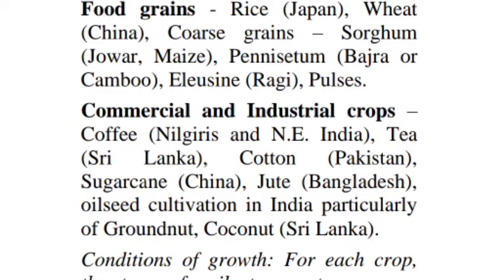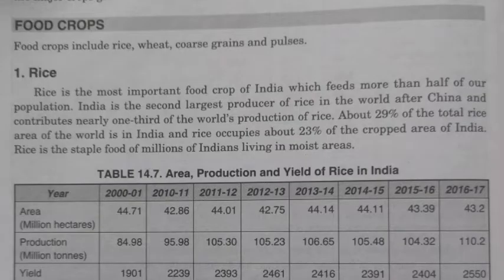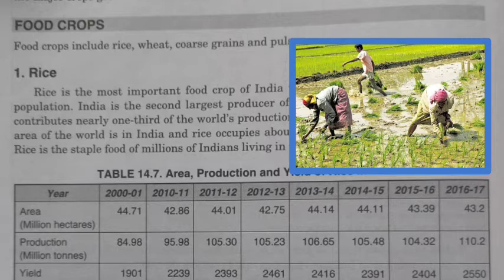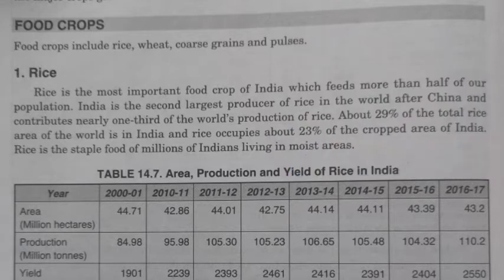Let's start with the discussion of food crops. First is rice. Rice is a very important food crop of our country, feeding millions of Indians. Around 23 percent of total crop area of India is under rice cultivation. India is the second largest producer of rice in the world after China.